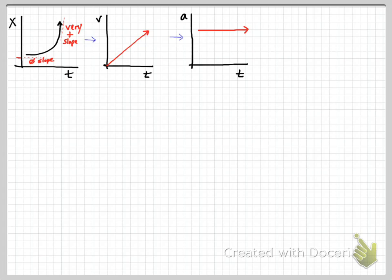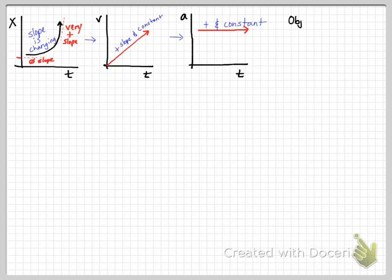For the acceleration versus time graph: the slope of a velocity versus time graph is acceleration. Since the velocity versus time slope is positive and constant, the acceleration versus time graph is positive and constant — just a straight constant line in the positive quadrant. The position versus time graph's slope is changing, so the velocity versus time graph is a changing line, increasing or decreasing over time.